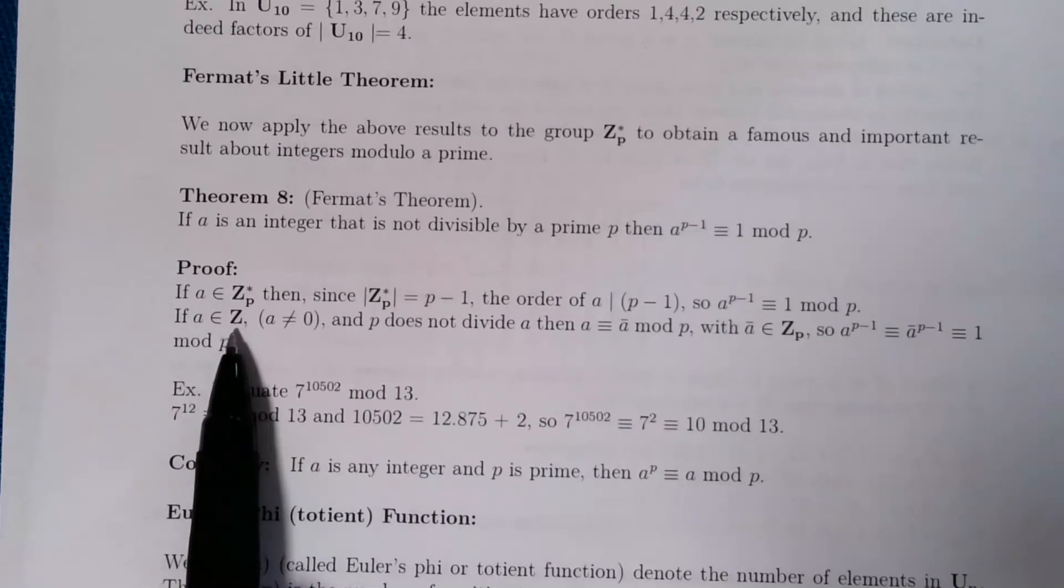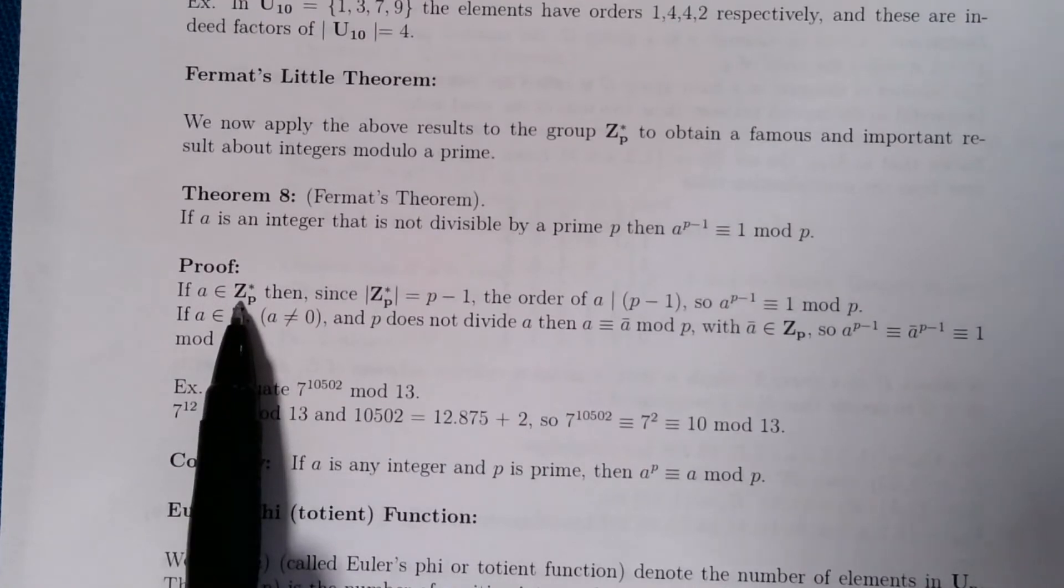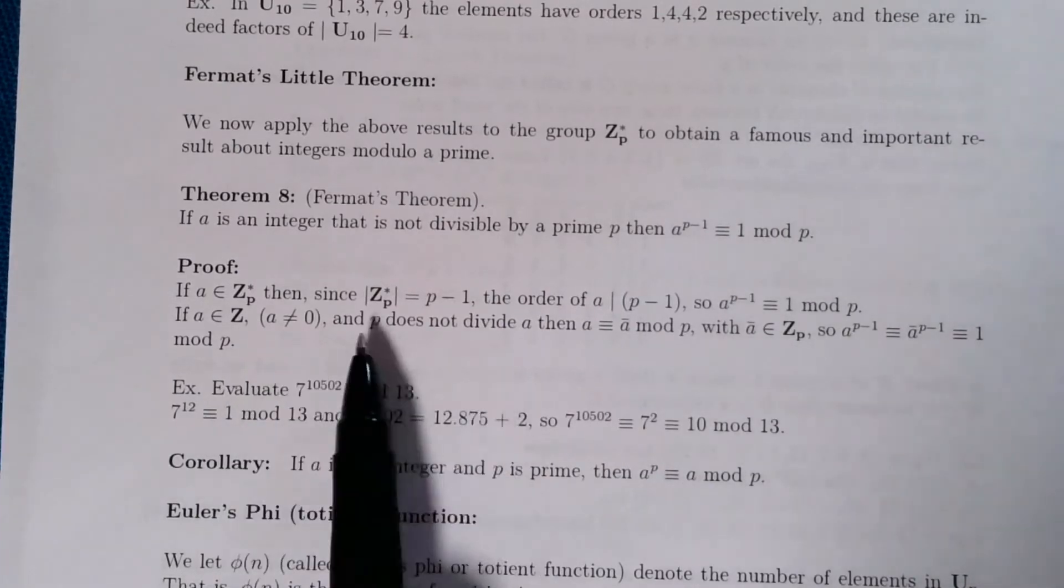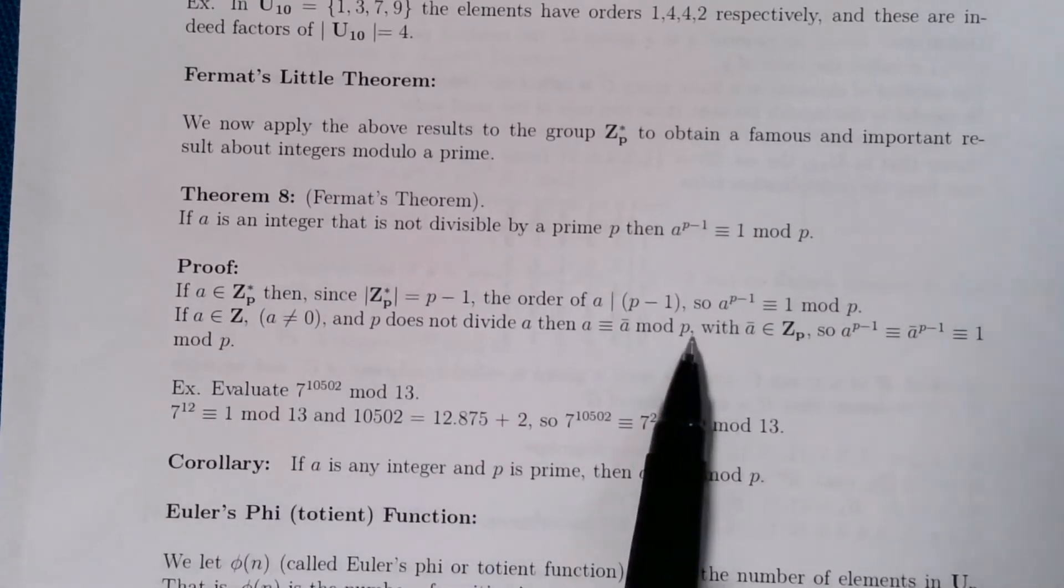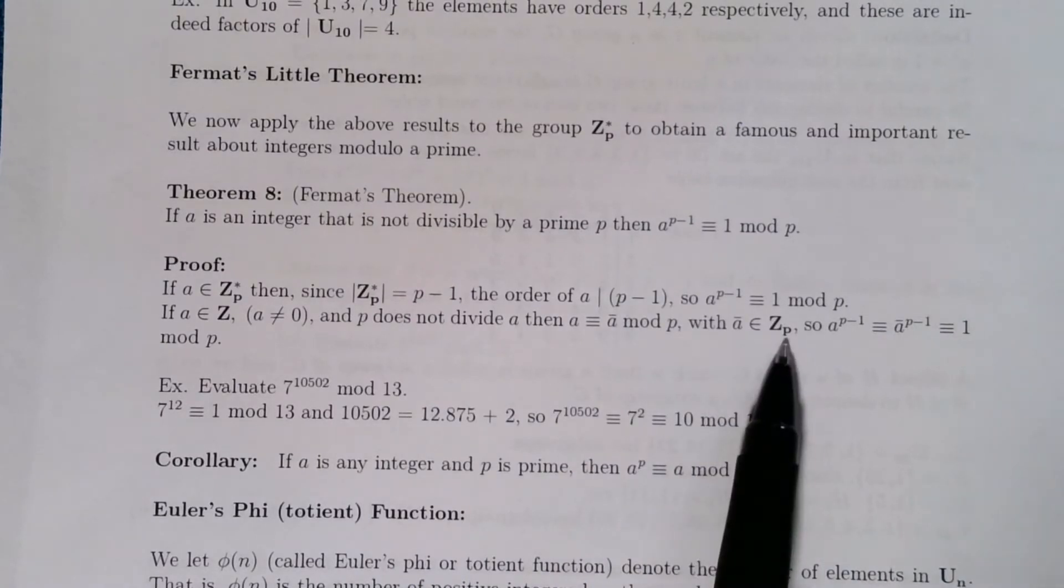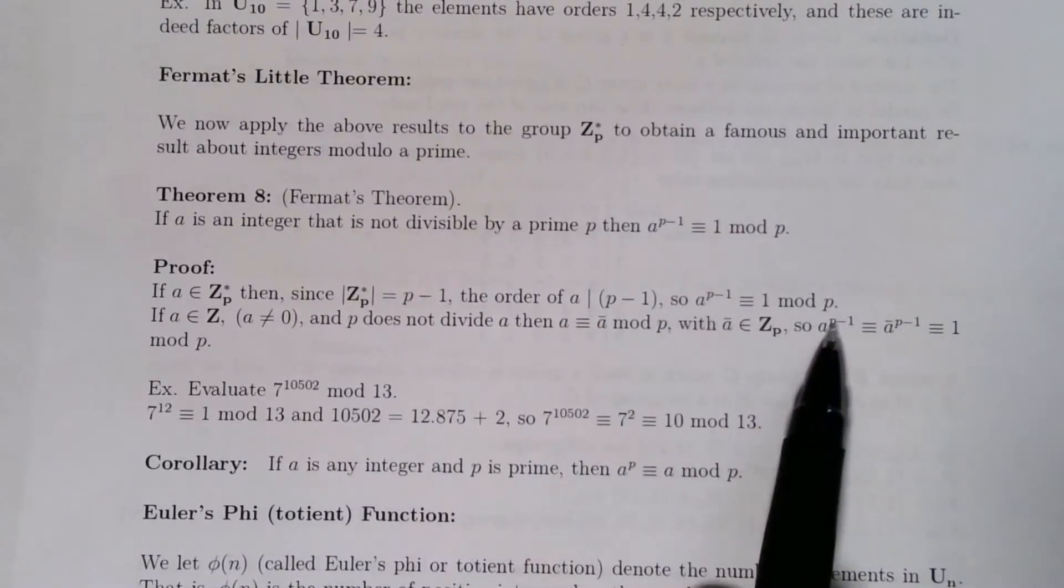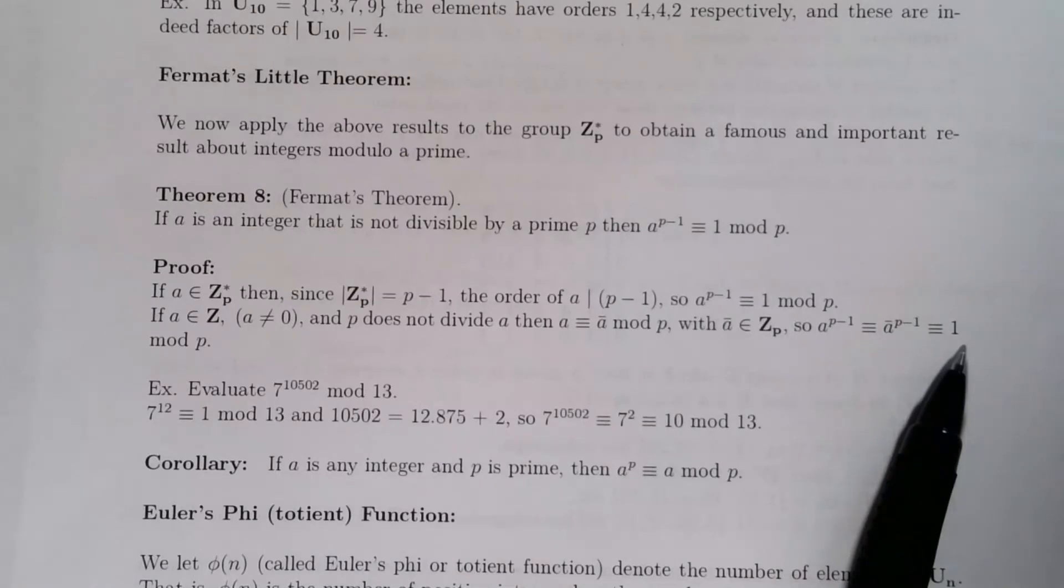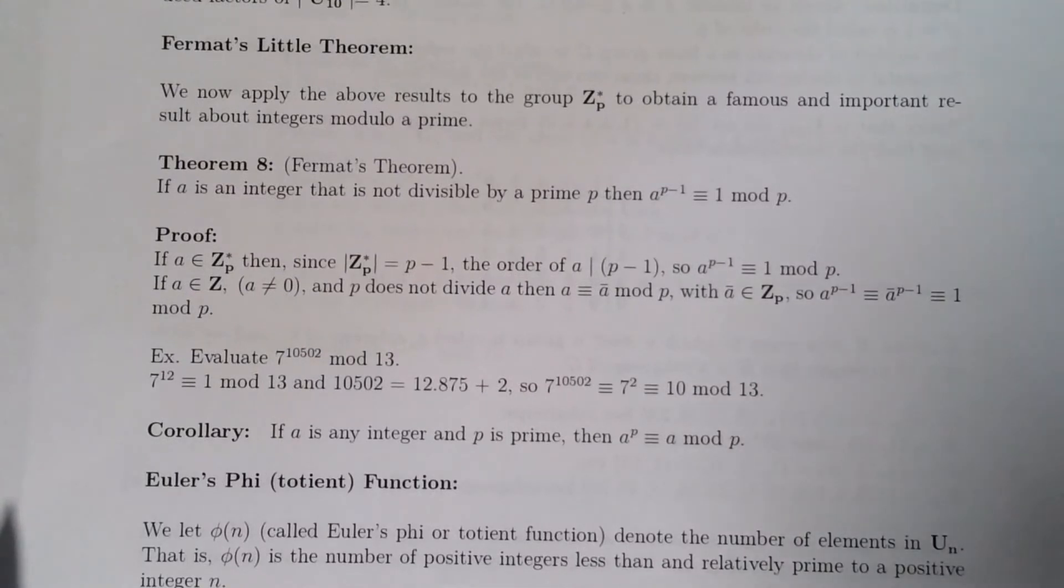If a is now an integer, so here we looked at the case where a is one of the numbers from 1 up to p-1. If we now look at the case where a is an integer, a not 0, and if p doesn't divide a, then we can simply take our integer a and put our mod p glasses on and read this modulo p and call this a bar. And now a bar is an integer in Z_p star. And by what we did above, a^(p-1) is congruent to a bar^(p-1), and we saw that it was 1 modulo p. So that's a little proof of Fermat's little theorem that follows very nicely from Lagrange's theorem.